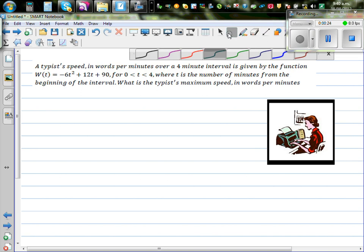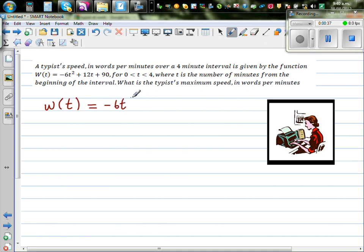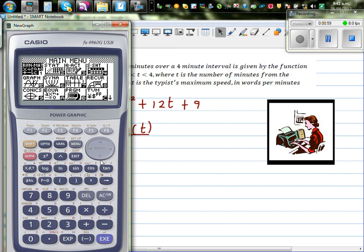So first let us understand this graphically and then we'll use calculus later. So the function W(t), or words per minute as a function of time, is -6t² + 12t + 90. So let us make up a table. This is t and this is words as a function of time. So let us say 0, 1, 2, 3, 4.